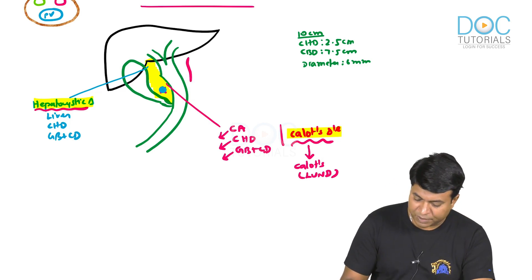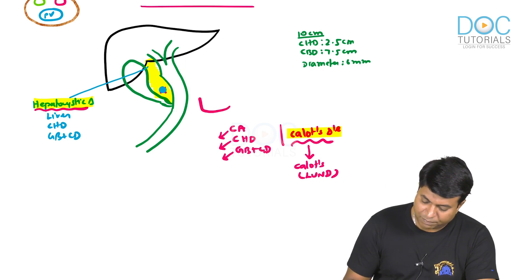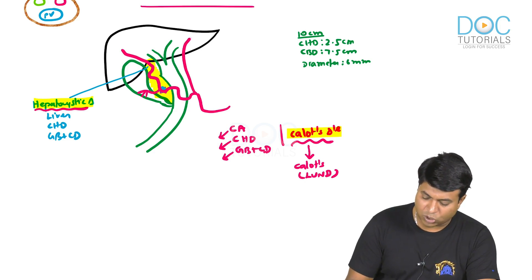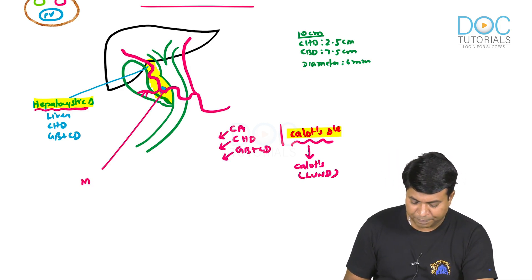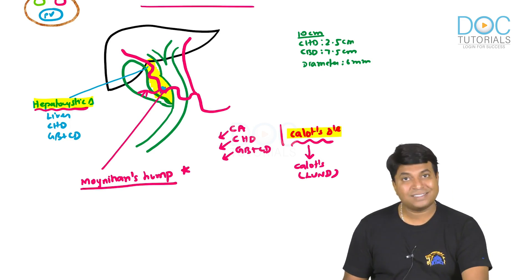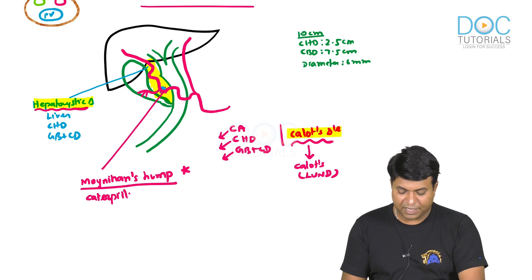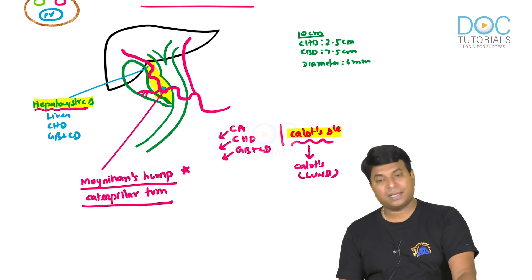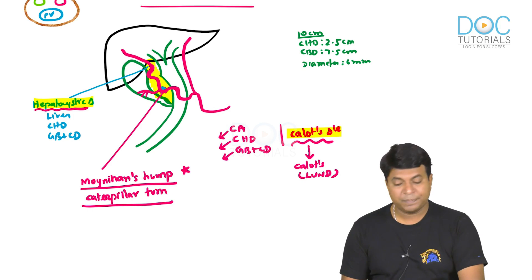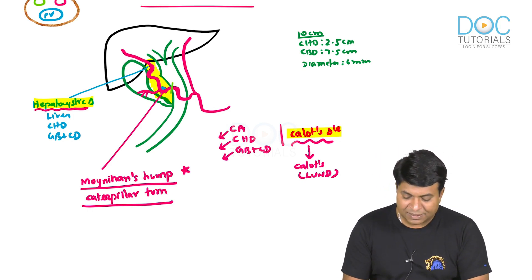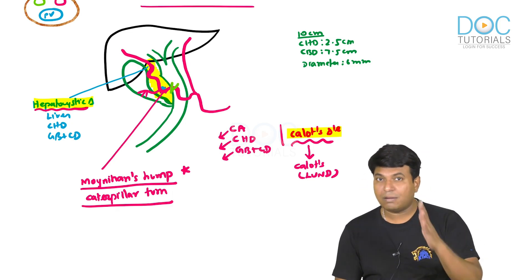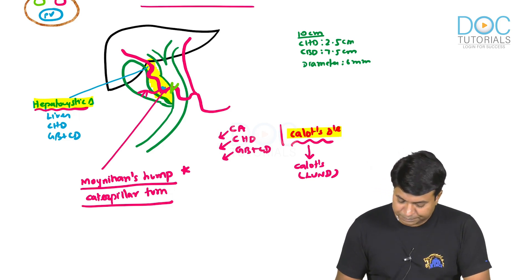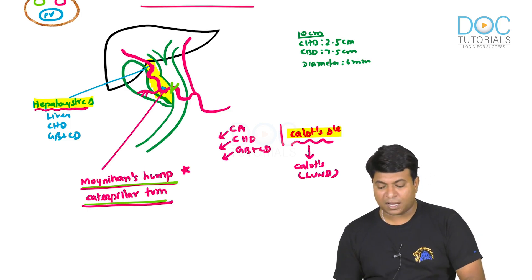An important variation: the right hepatic artery coming from the common hepatic artery may sometimes run into the Calot's triangle and give off the cystic artery branch. This abnormal tortuous course of the right hepatic artery is known as Moynihan's Hump or Caterpillar Turn. This is a repeat image-based question in FMG and National Board exams. During laparoscopic cholecystectomy, you may ligate this right hepatic artery mistaking it for the cystic artery, causing torrential bleeding.